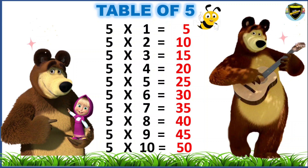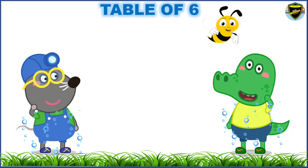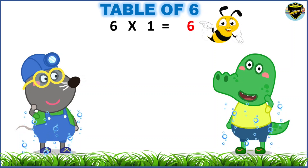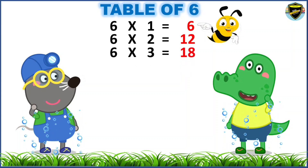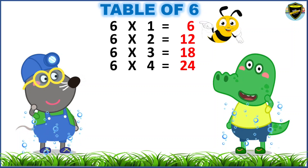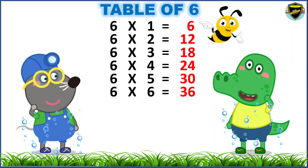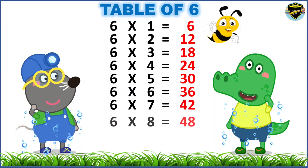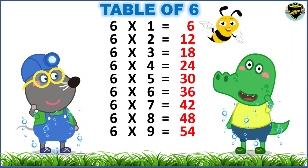Well done, children! Now, let's learn the table of six. Six ones are six. Six twos are twelve. Six threes are eighteen. Six fours are twenty-four. Six fives are thirty. Six sixes are thirty-six. Six sevens are forty-two. Six eights are forty-eight. Six nines are fifty-four. Six tens are sixty.